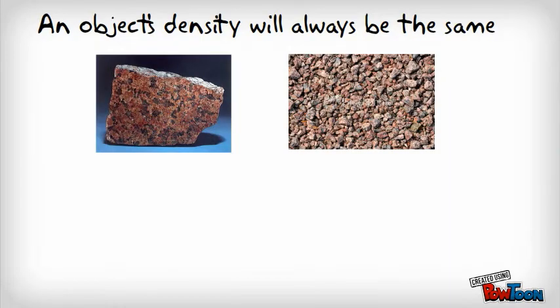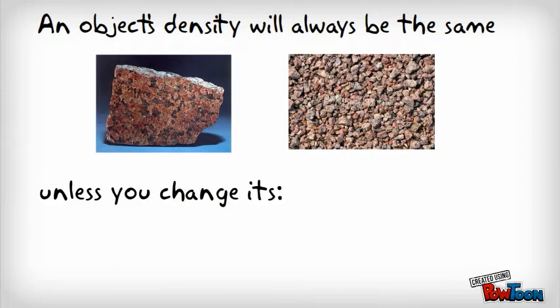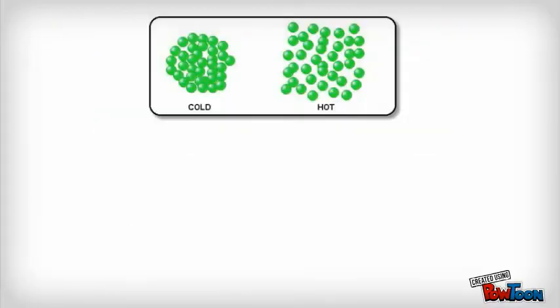But there are two things that will cause an object's density to change. Changing the temperature of the object, or changing the amount of pressure acting on the object.